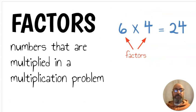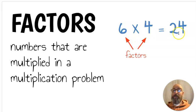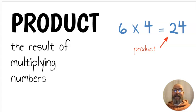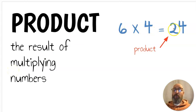Next we have the word factors. Factors are numbers that are multiplied in a multiplication problem. For example, six times four equals twenty-four — six and four are the factors. Next we have the product. The product is the result of multiplying numbers; in other words, it's the answer. Six times four equals twenty-four: six and four are the factors, but the product is twenty-four.